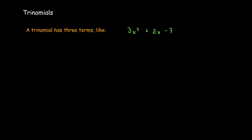The trinomials we're going to look at are going to be like 3x² + 2x - 7. They're going to have a term with a square on the variable — that's our quadratic term.